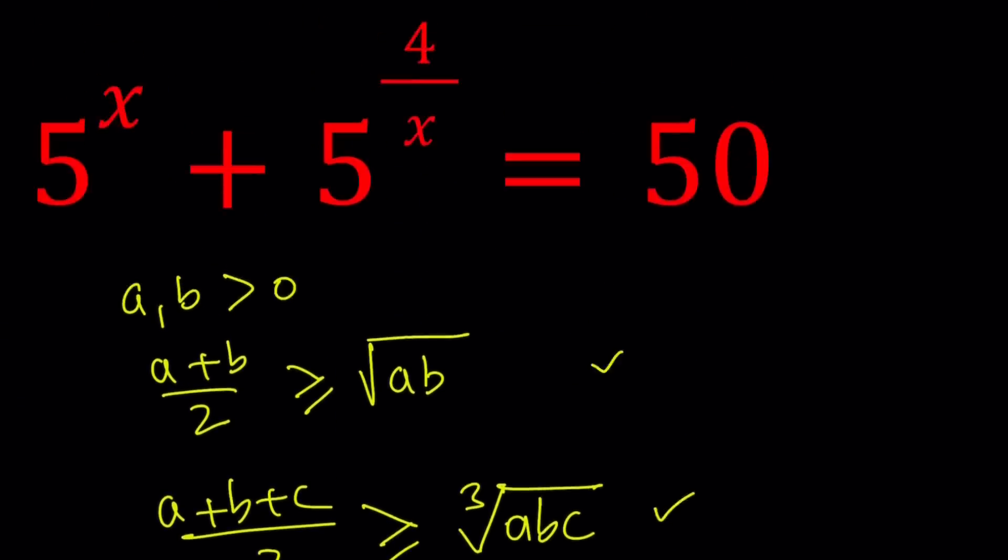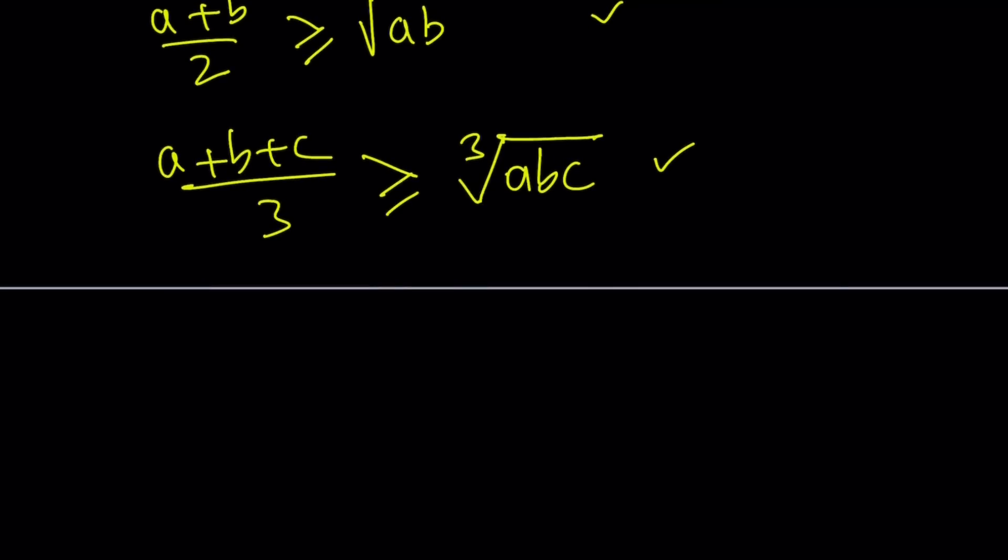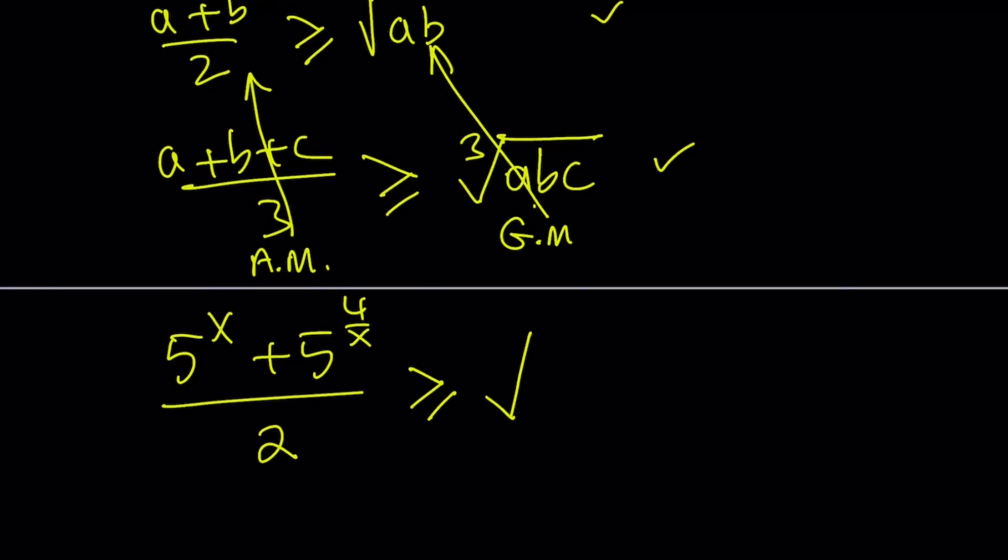Let's take a look at these two numbers: 5 to the x and 5 to the power 4 over x. As long as x is real, these two quantities are always going to be positive. Obviously if x is complex that's a different story, but if x is real then we have the following inequality. Add them up, divide by 2, this gives you the arithmetic mean which is AM, and the GM is the square root of the product.